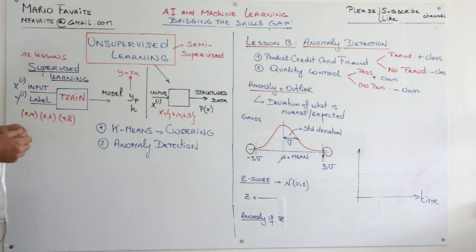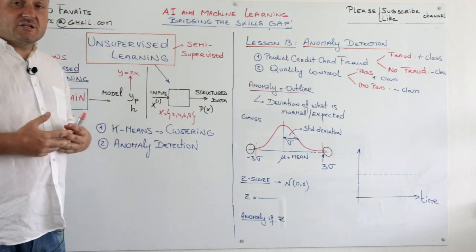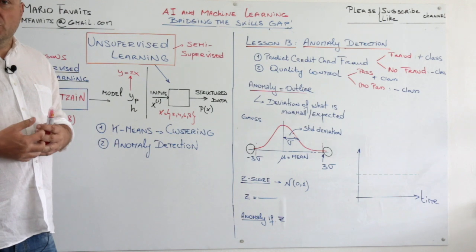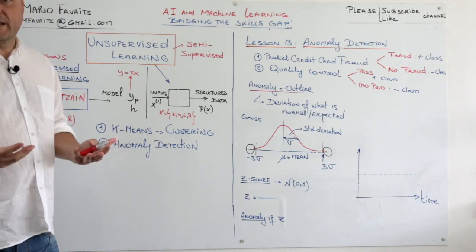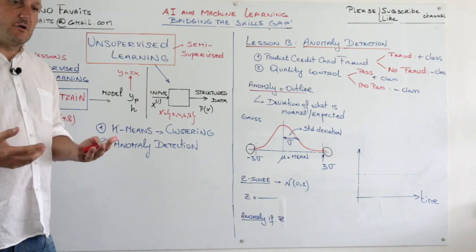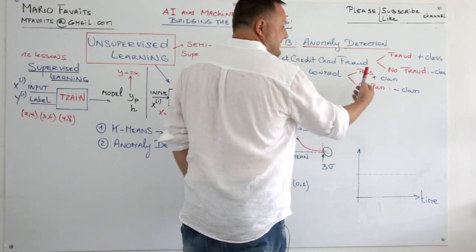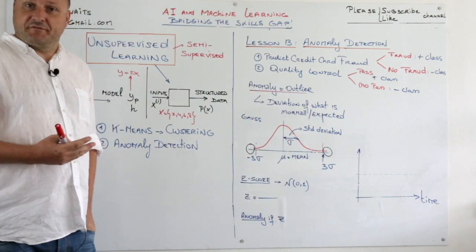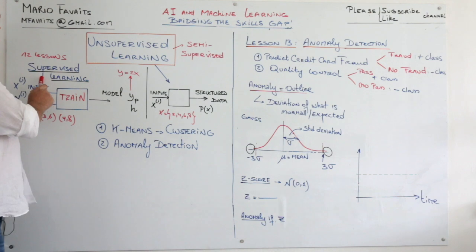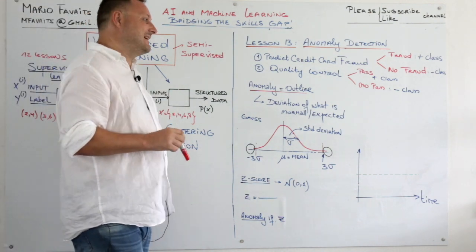Let us start with lesson 13, which is anomaly detection. Applications are predict credit card fraud or quality control. Now, you have pass or no pass, credit card fraud, you have fraud or no fraud. Most of you will say now, well, that's just a binary classifier, right? Which we've seen in supervised learning.